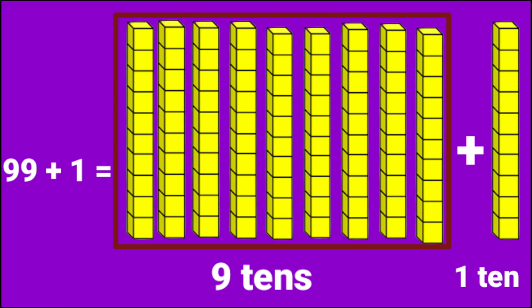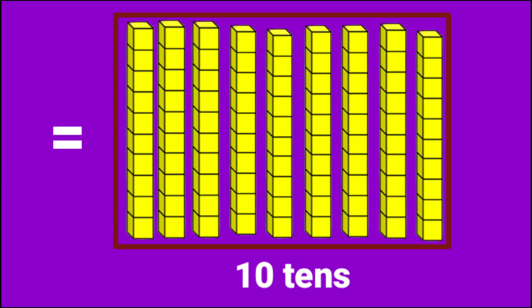99 plus 1 is equal to 9 tens plus 1 ten. 9 tens plus 1 ten is equal to 10 tens.